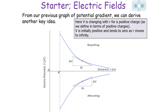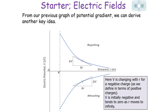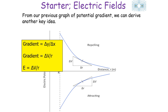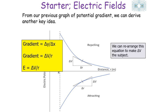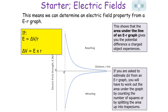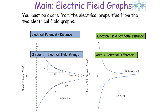For a positive charge, V is initially positive and tends to zero as r moves to infinity; for a negative charge, V is initially negative and tends to zero as r moves to infinity. The gradient of the tangent to the V against r graph gives the electrical field strength. Since E = ΔV/r, rearranging gives ΔV = E × r, which means the area under an E against r graph gives the potential difference. To estimate potential difference from an E against r graph, count the number of squares under the curve or split the area into trapeziums.